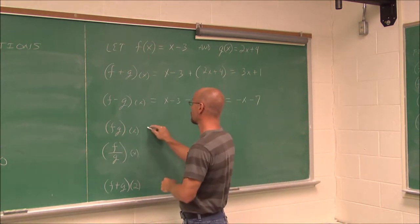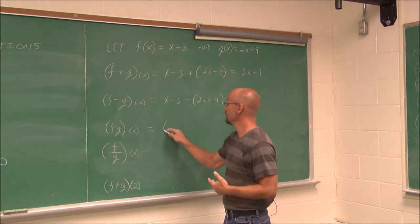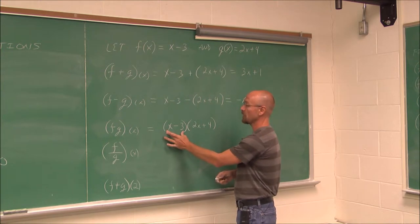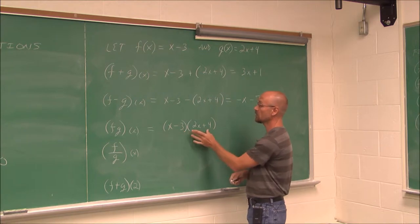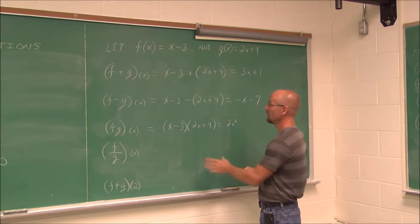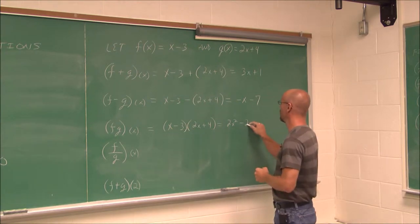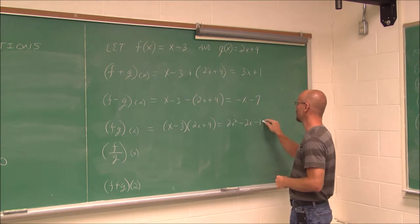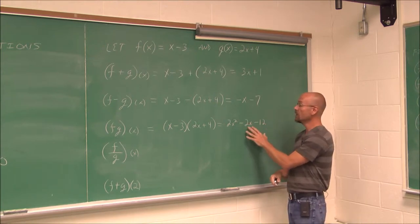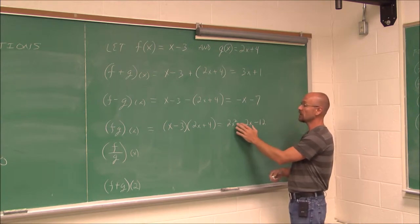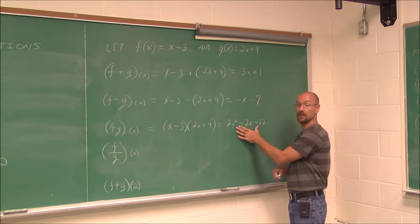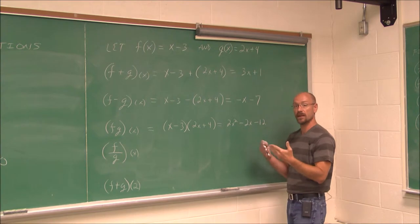Here we have f times g of x, which is essentially multiplying f times g. Since f is x minus 3 and g is 2x plus 4, we have two binomials and can use FOIL. FOILing this out, I get 2x squared minus 6x plus 4x, combining the middle terms to get negative 2x, and negative 3 times 4 is negative 12. So the product is 2x squared minus 2x minus 12.